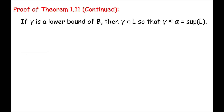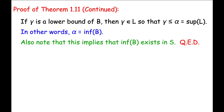Continuing, we also want to show that alpha is the greatest lower bound of B. If gamma is some other lower bound of B, then by definition gamma would be in L. But alpha is the sup of L. Therefore, gamma is less than or equal to alpha. In other words, alpha is indeed the greatest lower bound of B — it is the inf of B. Therefore, the inf of B exists in S. We have proved that if S has the least upper bound property, it also has the greatest lower bound property.